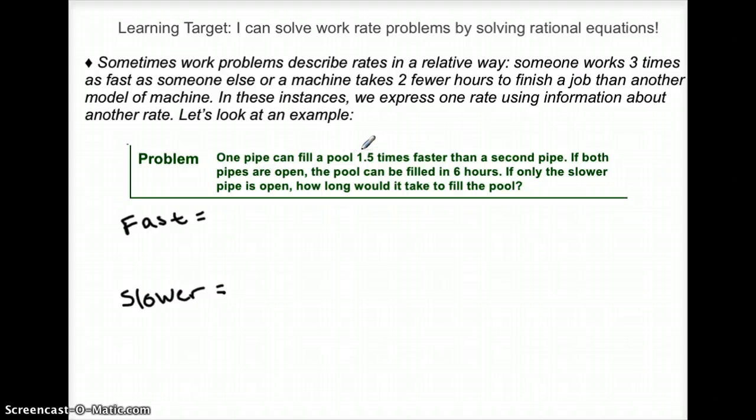One pipe can fill a pool 1.5 times faster than a second pipe. So can I say it backwards that the slower pipe is 1.5 times slower? So you want to think about who should have more time. Both pipes, they're talking about filling one pool.